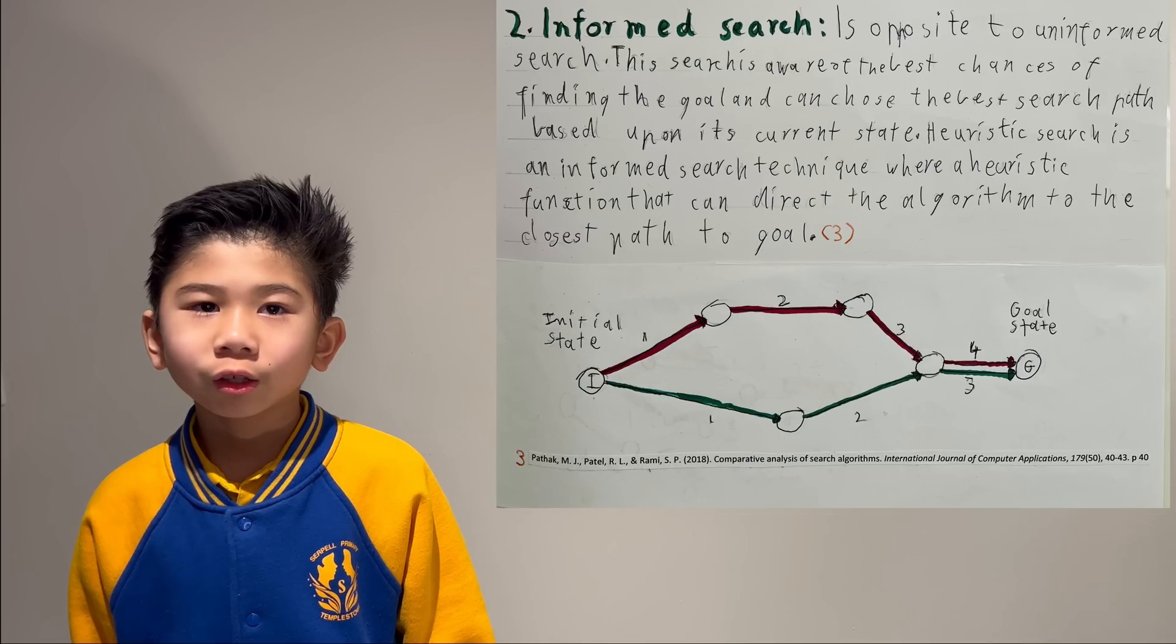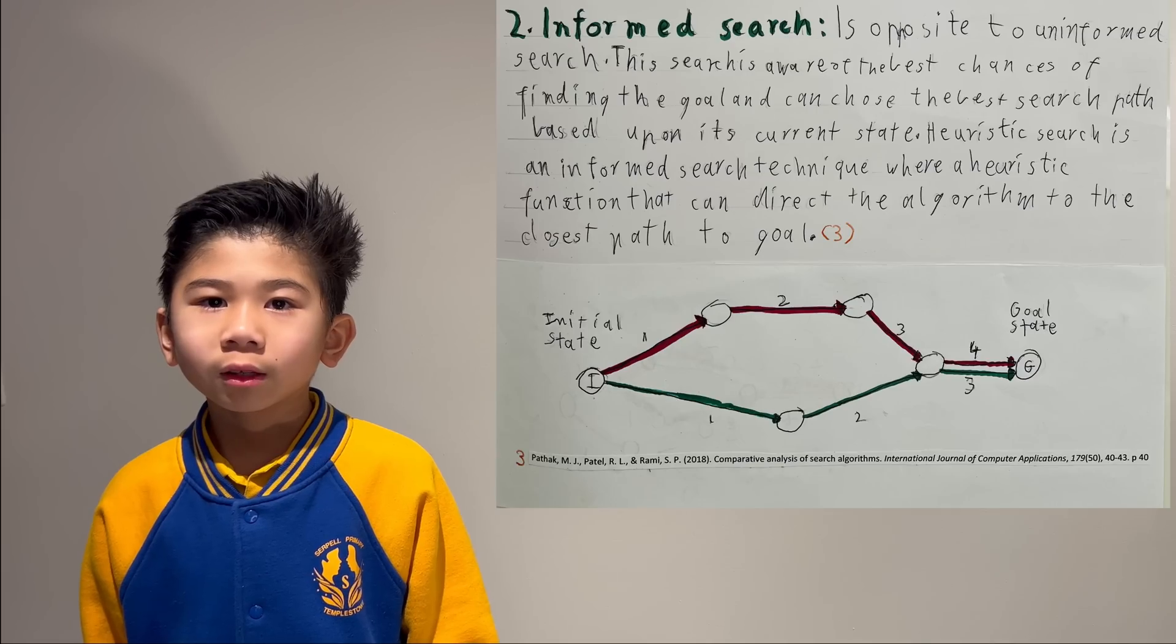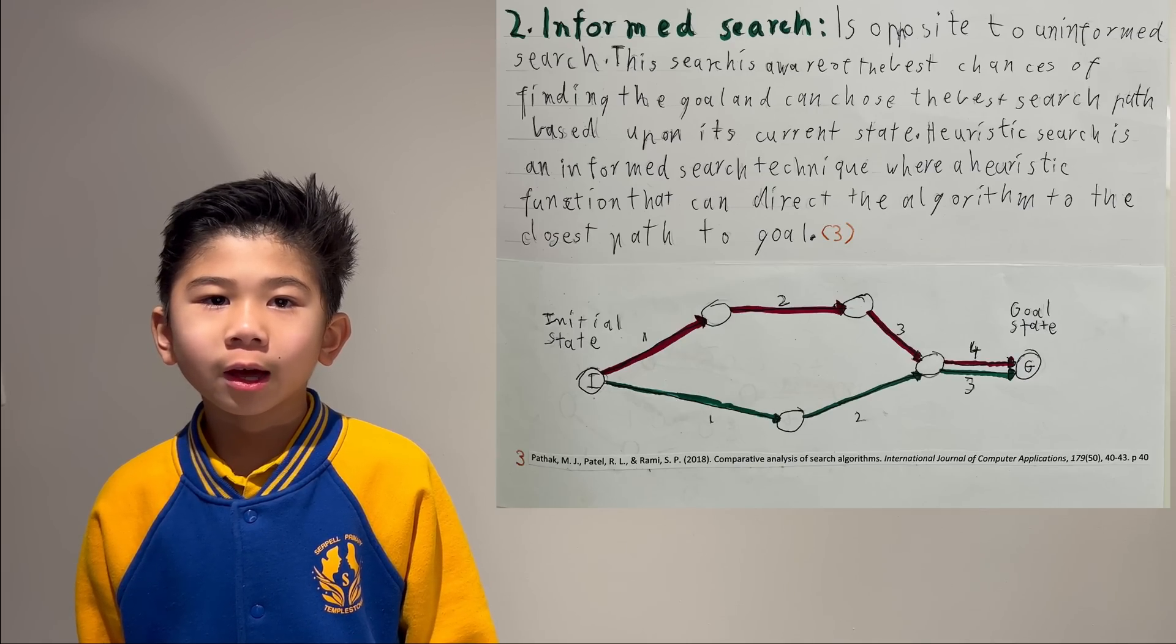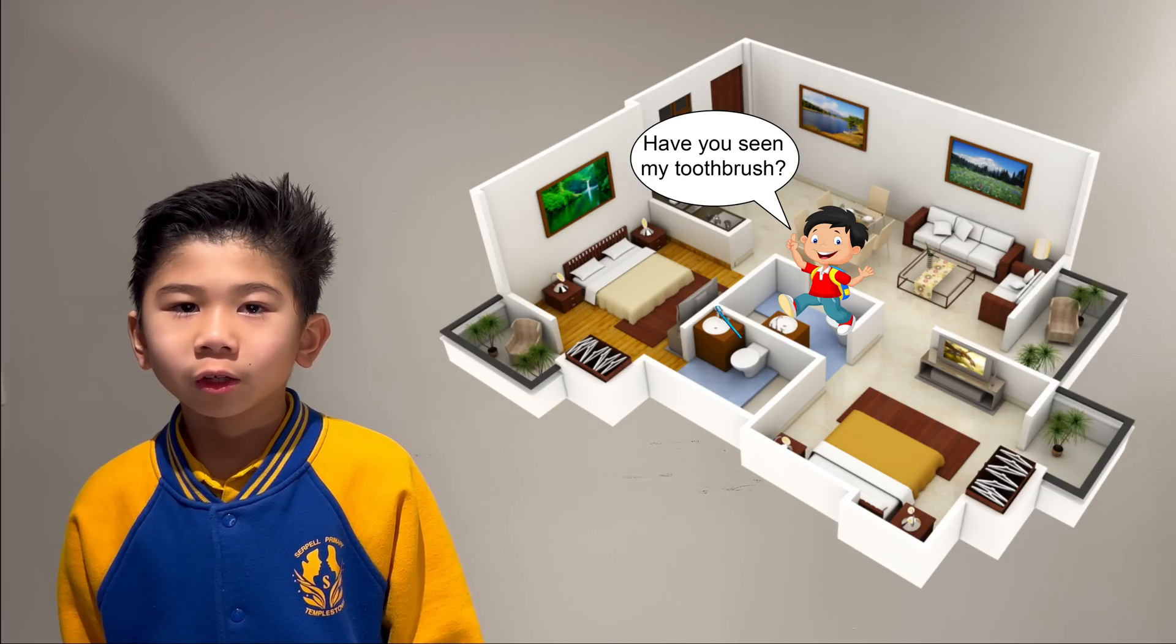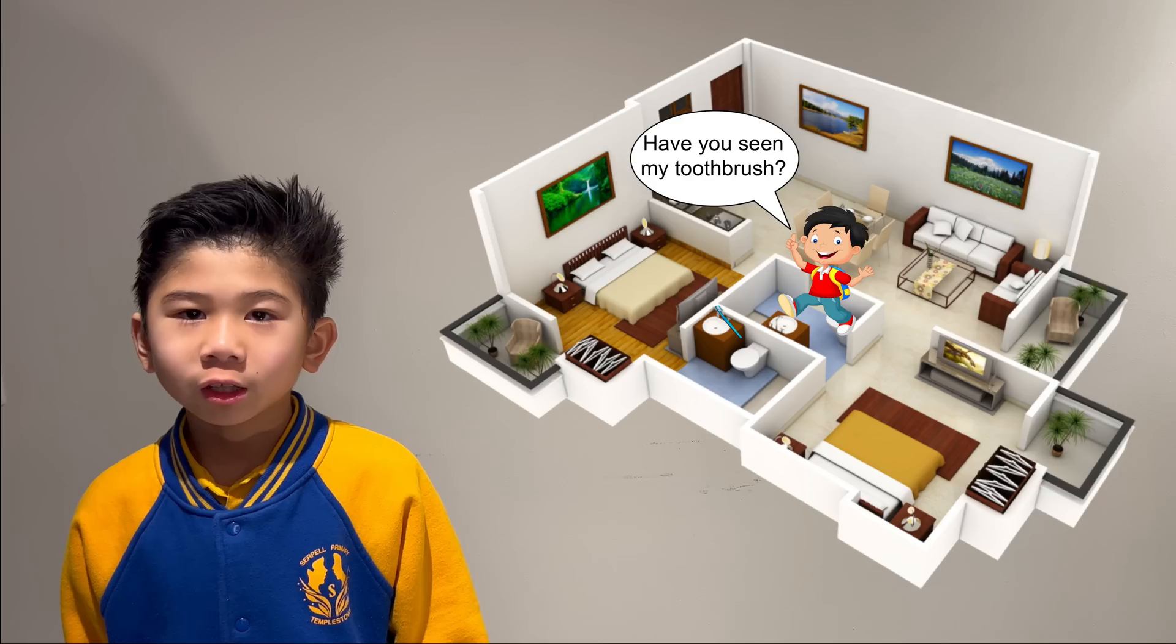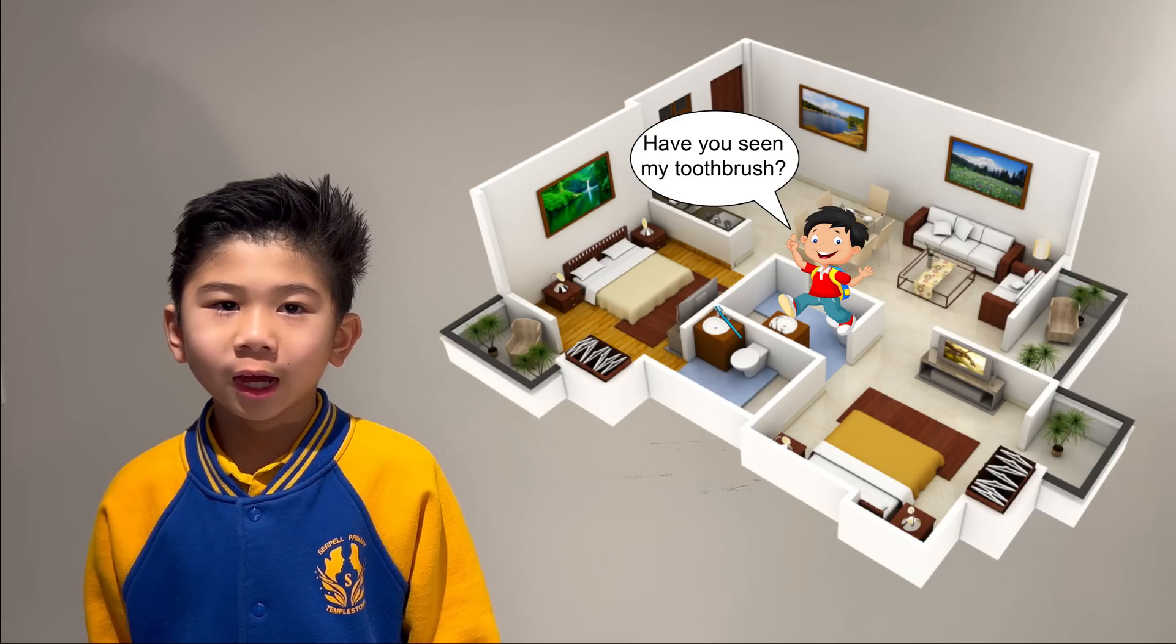Informed search. The opposite to an uninformed search, this search is aware of the best chances of finding the goal and can choose the best search path based upon its current state. For example, it would be like searching just the bathrooms for a toothbrush instead of every room in the house.